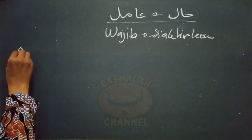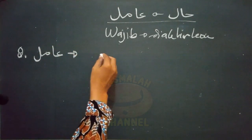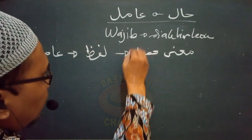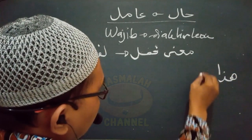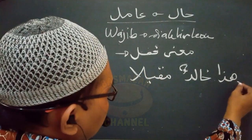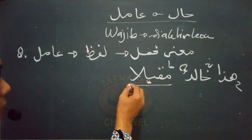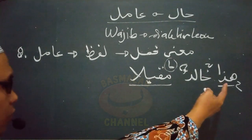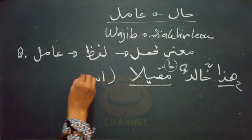Kondisi kedelapan adalah manakala amilnya berupa lafad yang mengandung makna fi'il. Contohnya seperti lafad 'hadha Khalidun mukbilan': ini Khalid padahal dalam keadaan menghadap. Lafad 'mukbilan' ini adalah hal sementara amilnya adalah lafad 'hadha' yaitu isim isyarah. Lafad 'hadha' merupakan lafad yang mengandung makna fi'il, yaitu mengandung lafad 'usyiru' (aku menunjuk). Dalam kondisi ini hal tidak boleh mendahului amilnya.